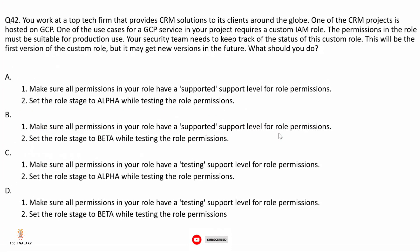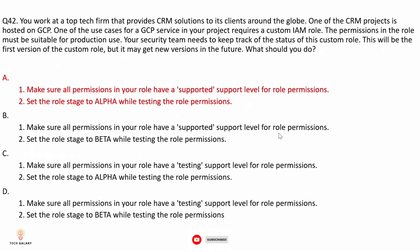Question 42: You work at a top tech firm providing CRM solutions. One of your GCP service use cases requires a custom IAM role. The permissions must be suitable for production use, and your security team needs to track the status of this custom role. This will be the first version of the role but may get new versions in the future. The correct answer is option A.